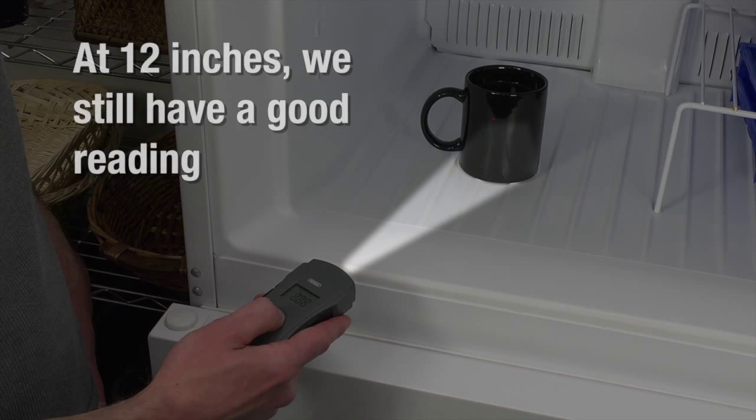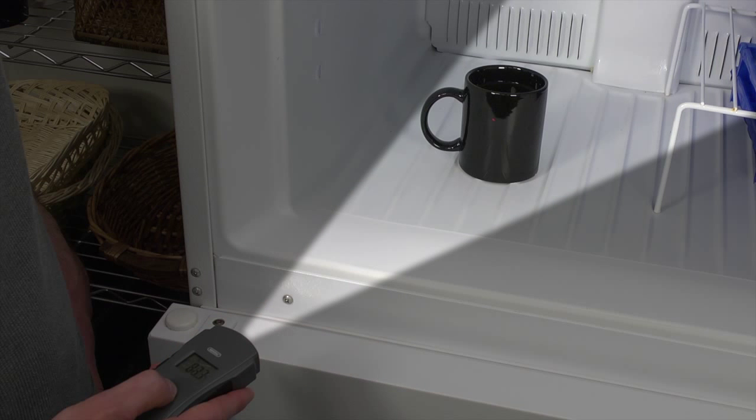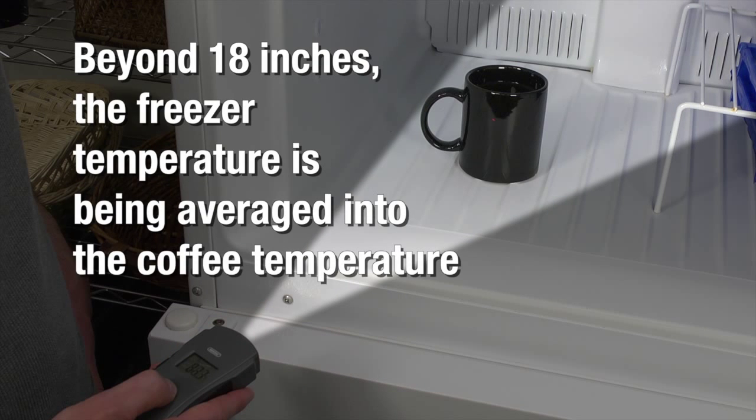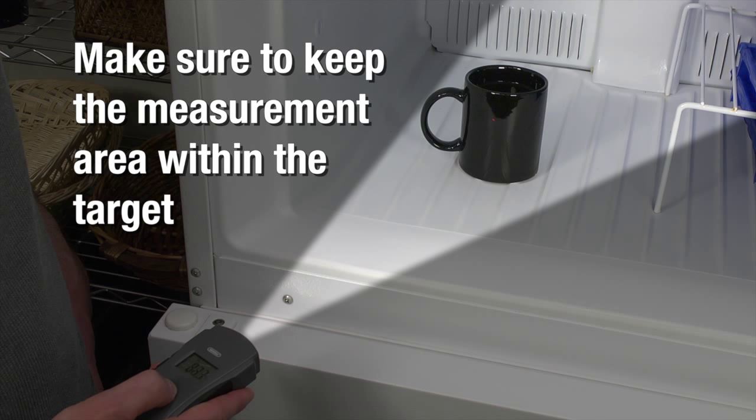As you move away, you will still get a good reading at 12 inches because the measurement area is still within the cup's diameter. As you go out beyond 18 inches though, you will see a difference. The freezer temperature is being averaged into the coffee temperature. Make sure to keep the measurement area within the target.